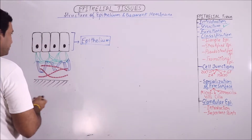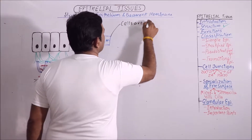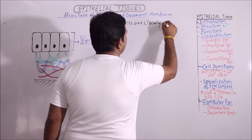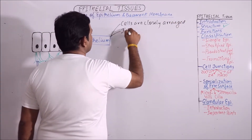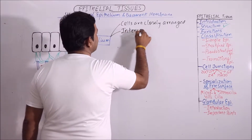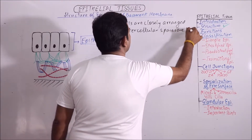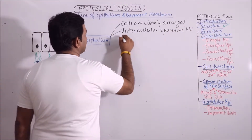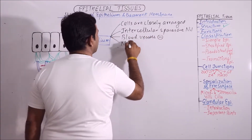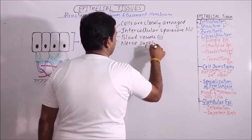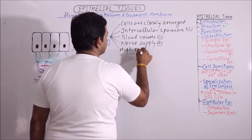The characters of epithelium are: the cells are closely arranged or placed. Because of this, the intercellular spaces are nil. Blood vessels are absent, but nerve supply may be present. High regeneration capacity is there.